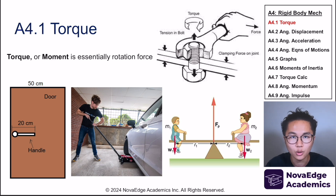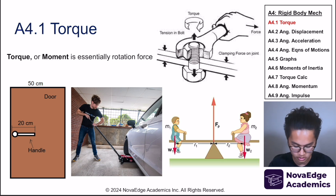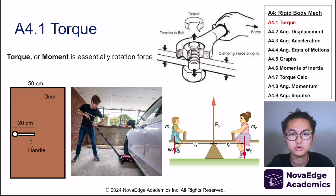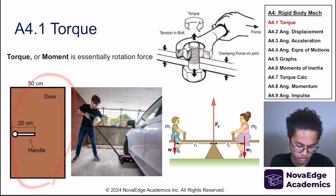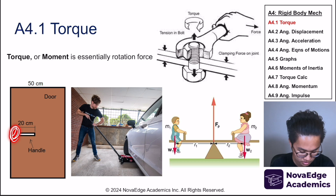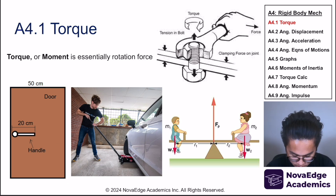First, let's talk about torque. Torque is essentially the rotational force — how strongly you are rotating in a certain direction. It is basically force but in rotation. A good example is a door: we press down on the handle, providing a torque — a rotational force. We also open the door by pushing or pulling from a distance away from the hinge, which is the center of rotation, and we provide a rotational force at that distance.